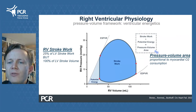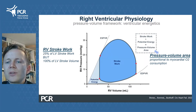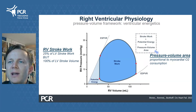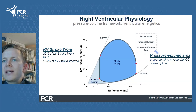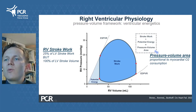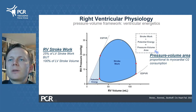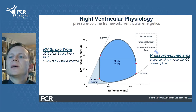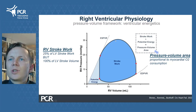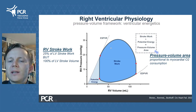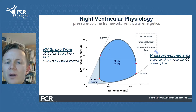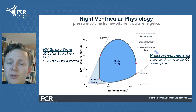The pressure-volume diagram also helps to characterize right ventricular energetics. The area within the pressure-volume loop represents the stroke work, and together with the potential energy this equals the pressure-volume loop area, which is directly and linearly related to myocardial oxygen consumption.